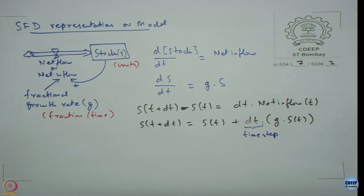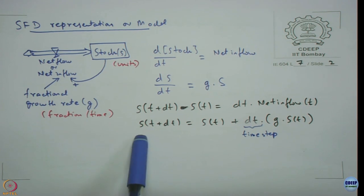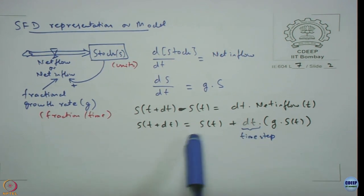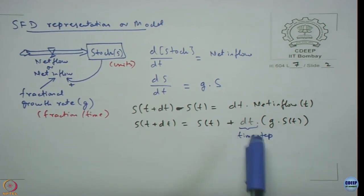If you are using Euler's method, if I say time step of 1 then dt is simply 1. S at time t plus 1 is S at time t plus 1 into G into S of t. And to simulate this model, all we are going to do is keep solving this equation again and again.